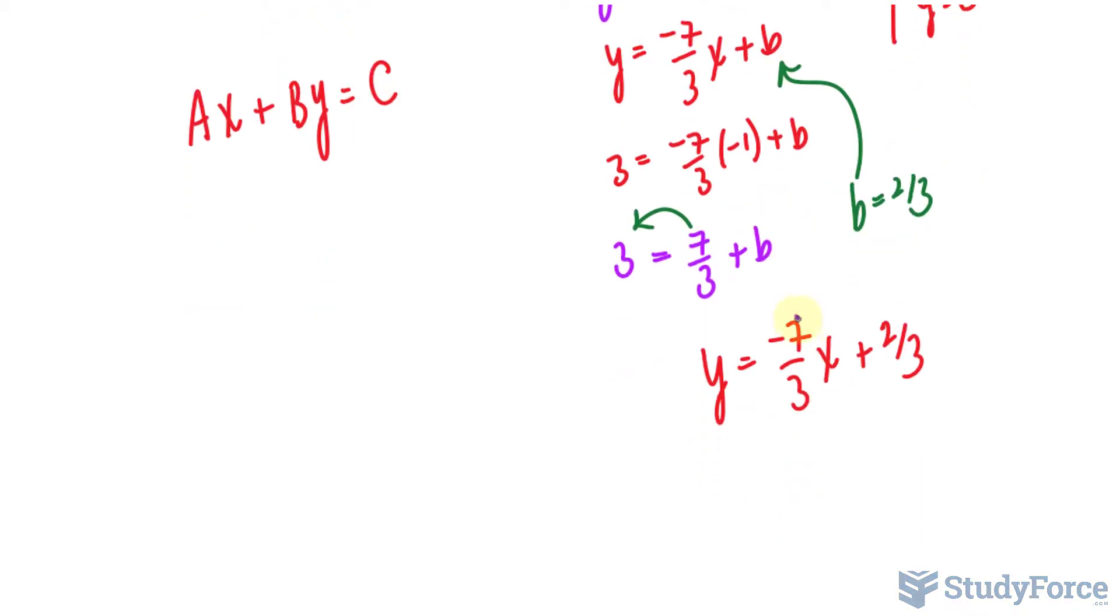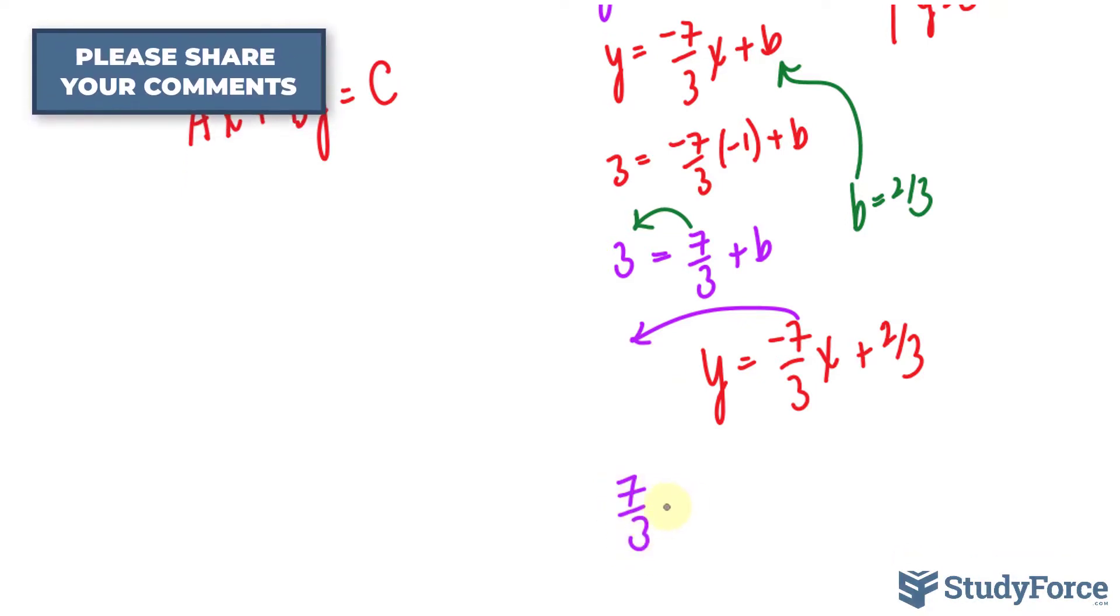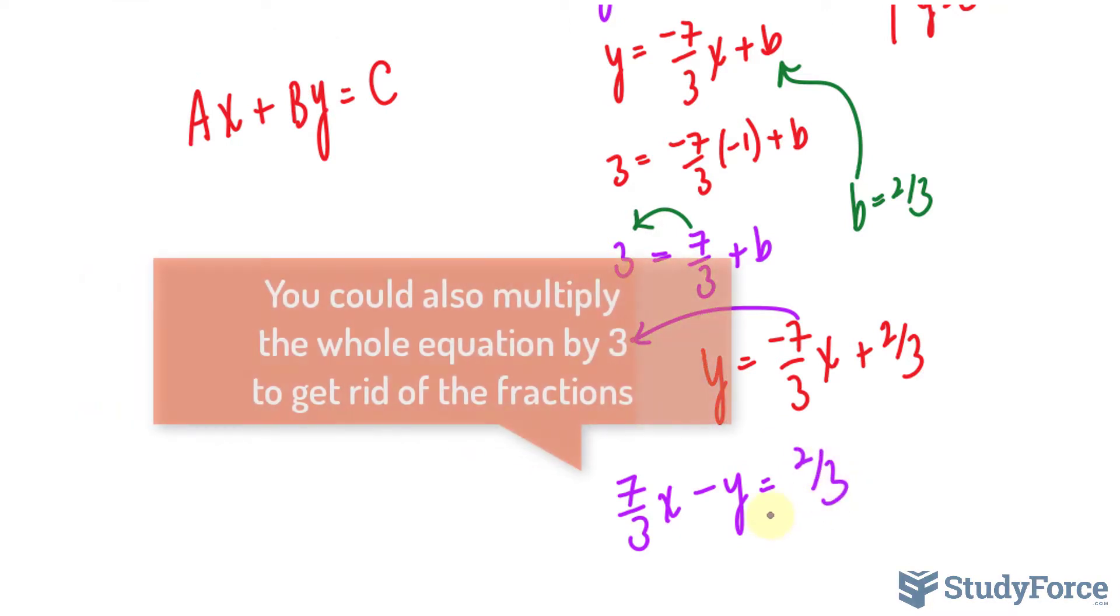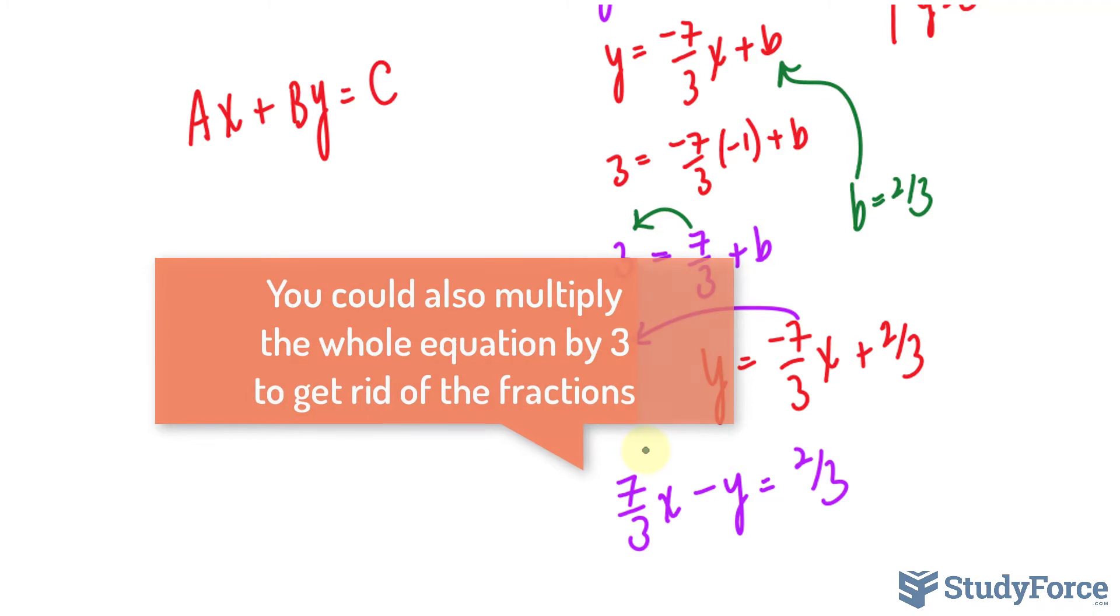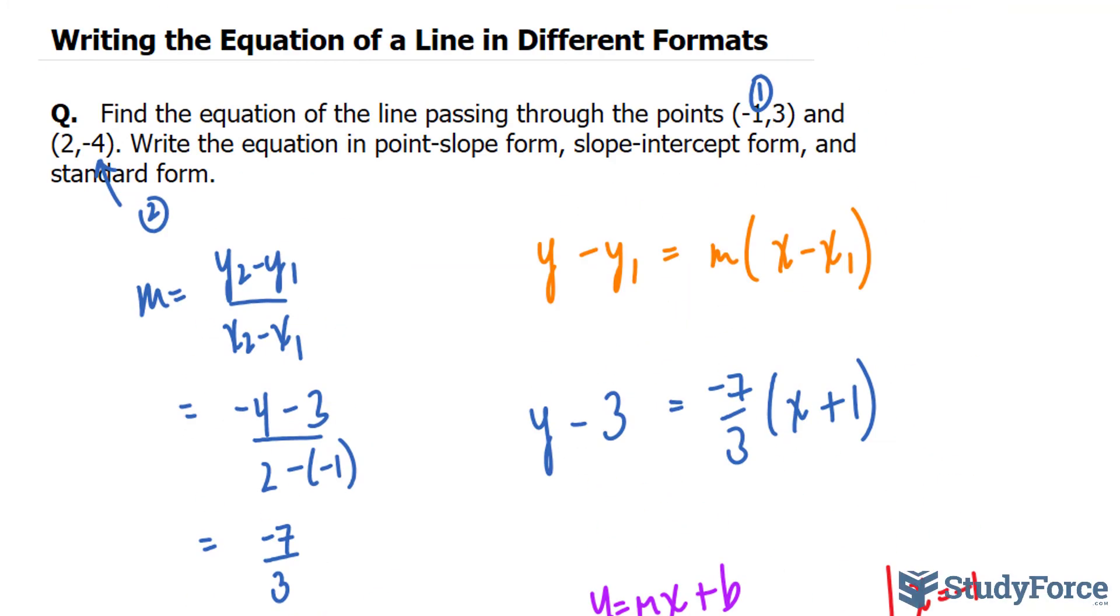So we will bring this over. Here, we have positive 7 over 3x minus y is equal to 2 over 3. What you see in purple is the standard form of a linear equation. And there you have it, that's how to write the equation of a line in different formats.